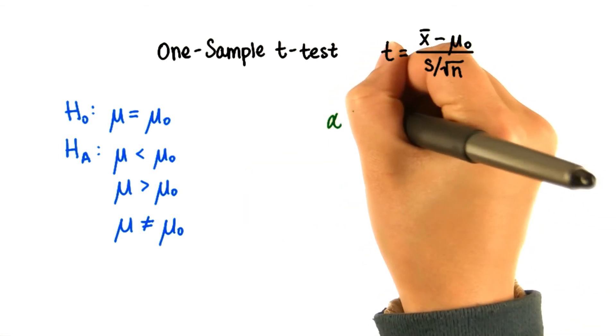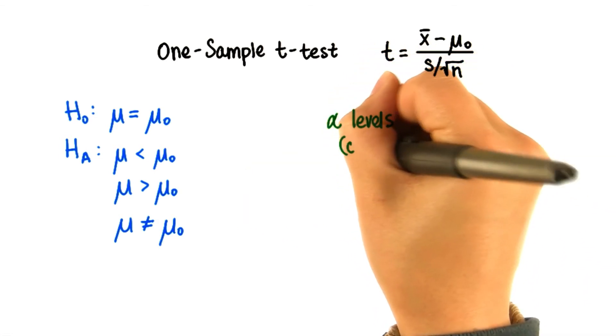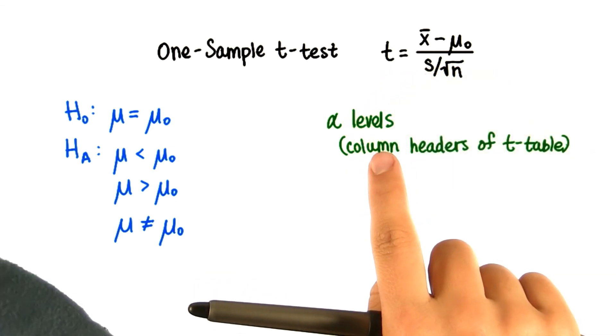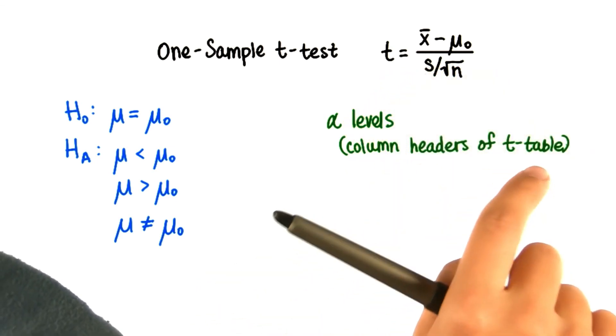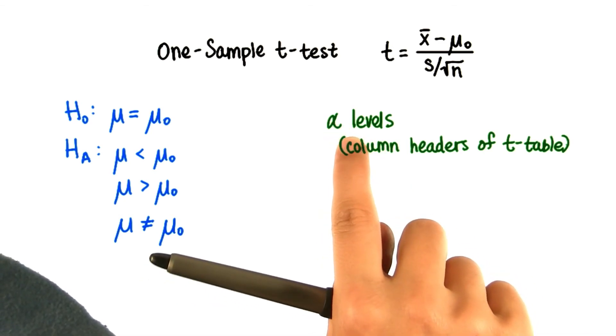Again, we have our alpha levels, which are written in the column headers of the t-table. The t-table tells us the t-critical values that mark the cutoff point for the alpha levels.